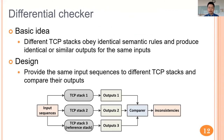Different TCP stacks should obey identical semantic rules, and thus they should produce identical or similar outputs for the same inputs. Otherwise, these TCP stacks have implementation inconsistency, indicating that some of them possibly have semantic bugs. Based on this idea, we design a differential checker for TCP stacks to detect semantic bugs that cause output inconsistencies. As shown in the figure, our differential checker provides the same input sequences to multiple TCP stacks, then records and compares their outputs to identify and report inconsistencies. The user can check these inconsistencies to find related semantic bugs.